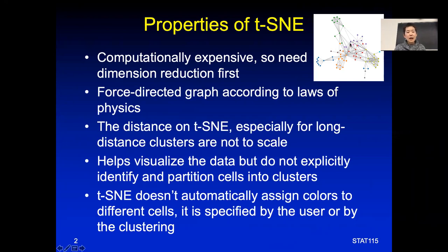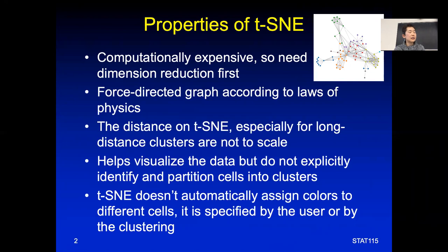You can imagine it like a force-directed graph: between every pair of samples there is some distance it's trying to balance against all other cells. This process finds an equilibrium to converge on, which is why it's computationally intensive. Once distances are calculated you can draw a 2D map. However, t-SNE does not explicitly identify or partition cells into clusters — all dots are just black until you label them by color or by expression of a particular gene.